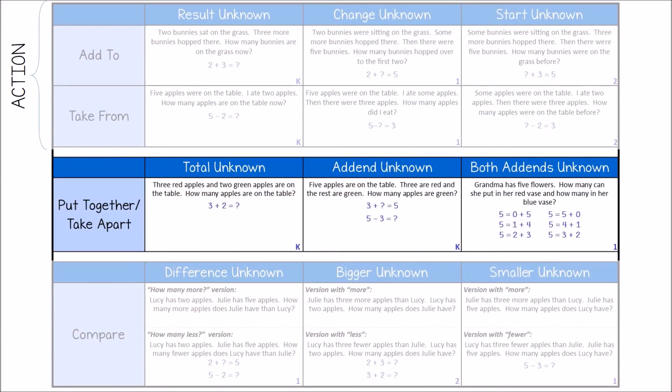The next category of problems is called put together, take apart. These problems have no action — nothing is being added to or taken from the set. Instead, we are looking at parts of the whole amount. In these problems, we are examining a part-part-whole relationship.